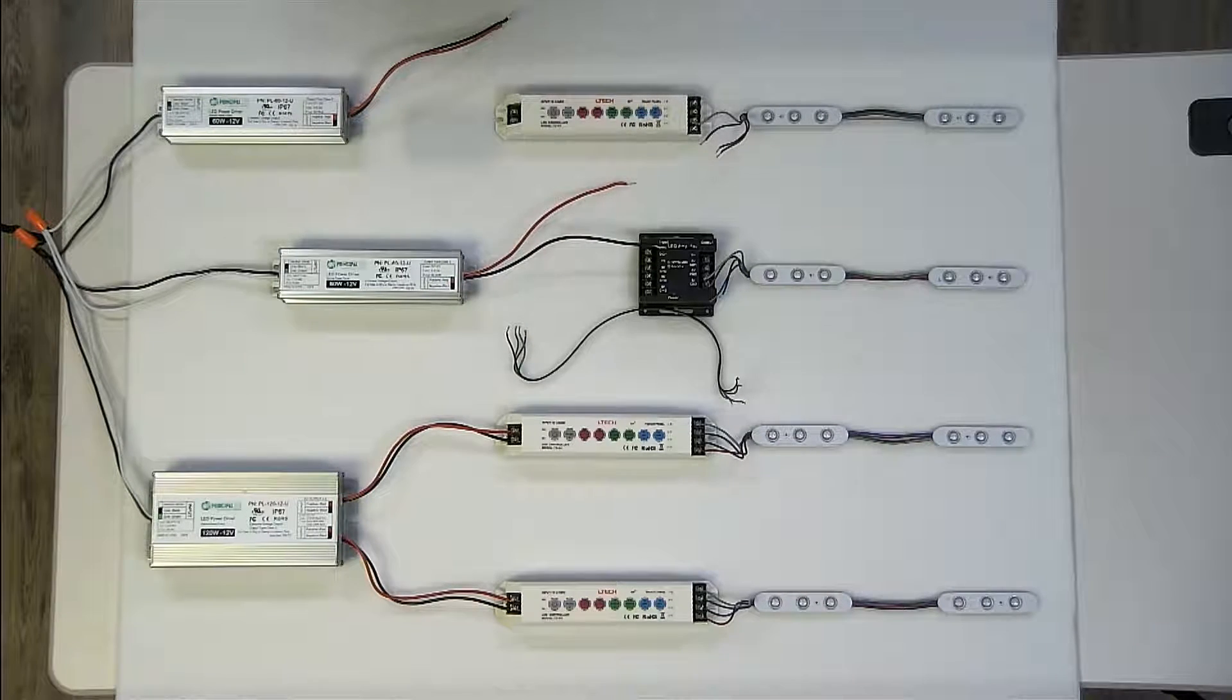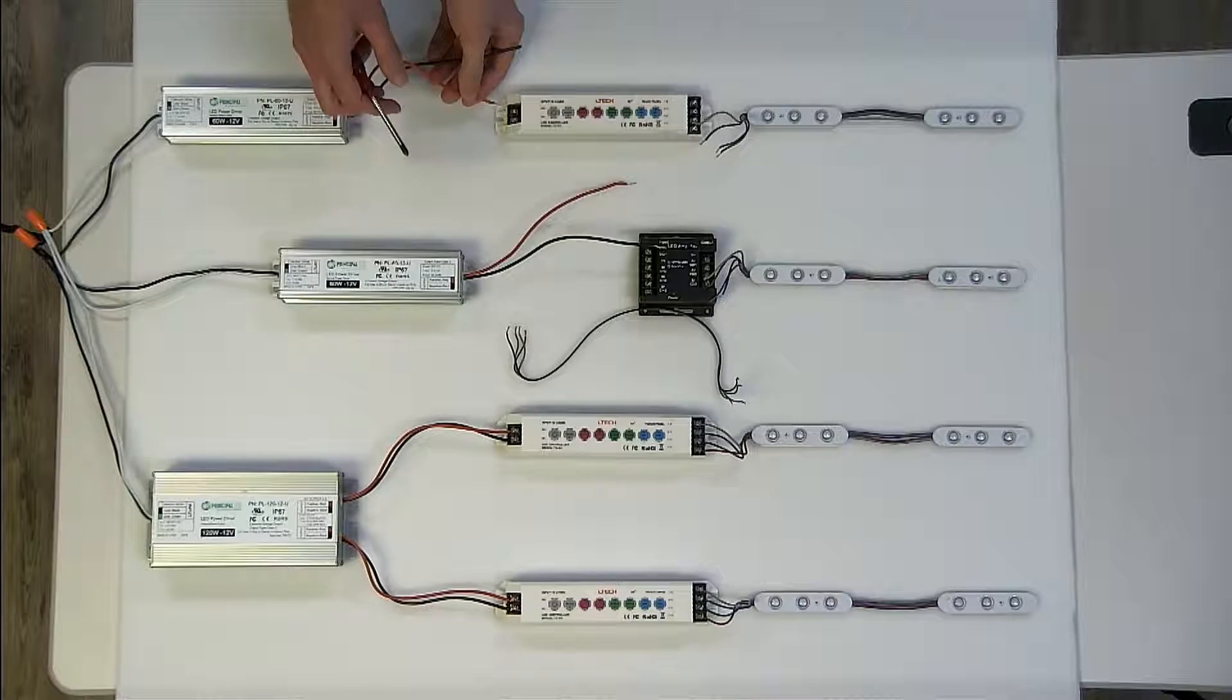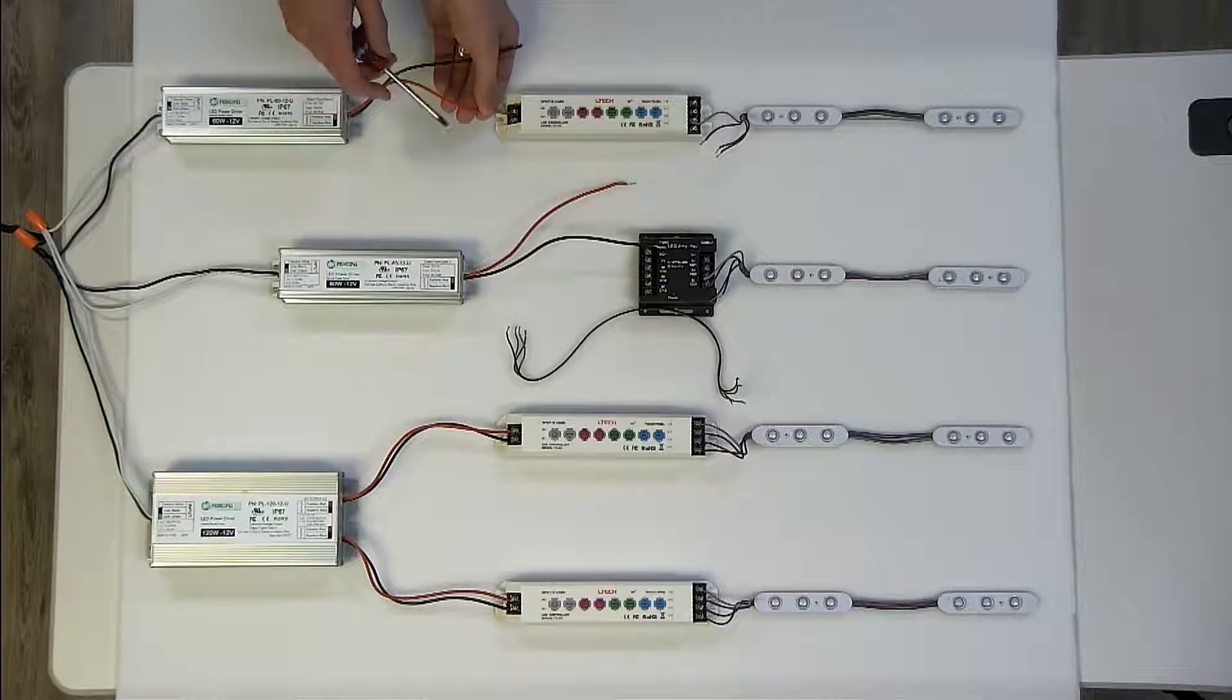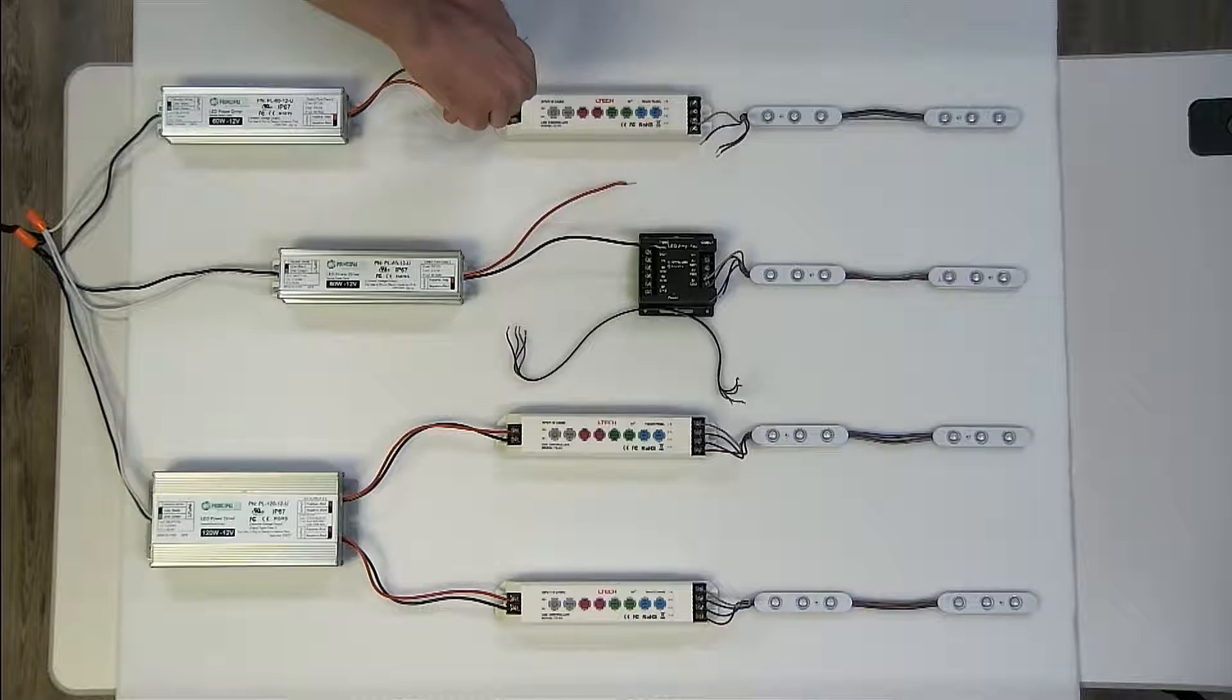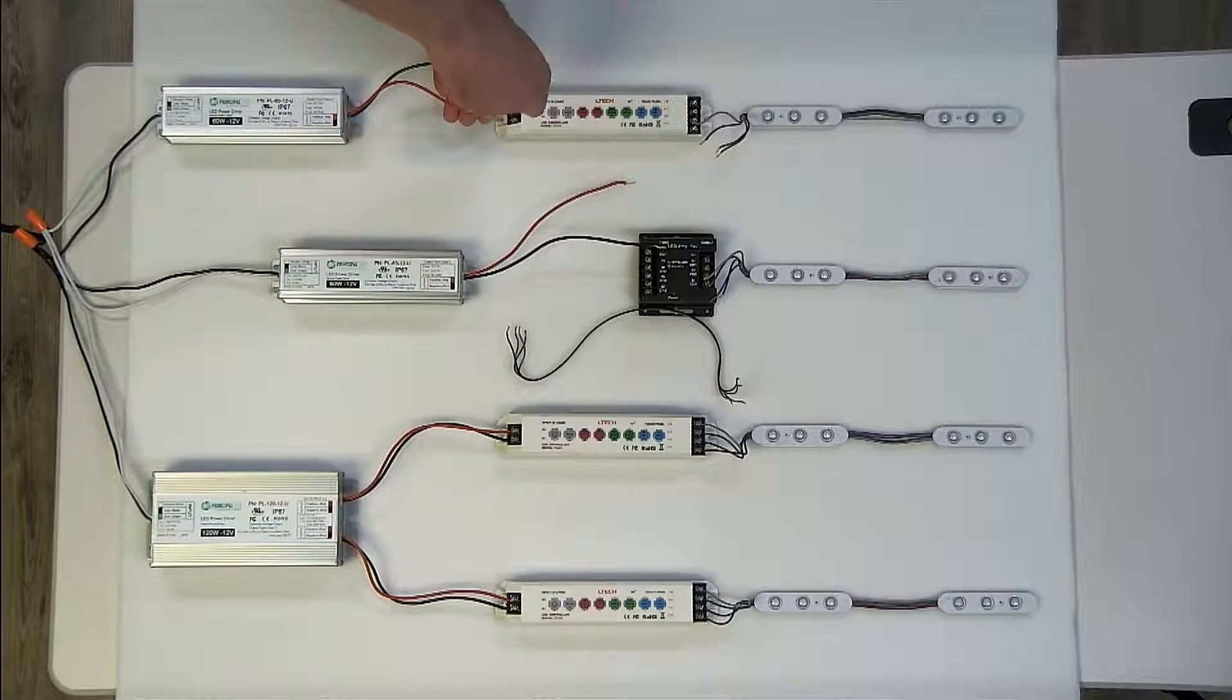Next step, take your positive and negative terminals out of your power supply and insert them into the terminals and screw them down into the incoming side of the T35A.